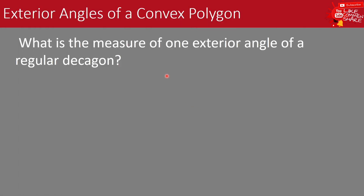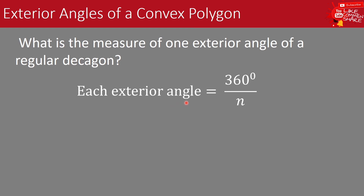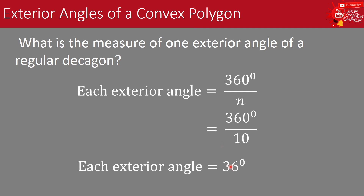Example: What is the measure of one exterior angle of a regular decagon? We use the formula: each exterior angle equals 360 degrees divided by n. Since a regular decagon has 10 sides, we substitute n with 10: 360 degrees divided by 10 equals 36 degrees. Therefore, each exterior angle of a regular decagon measures 36 degrees.